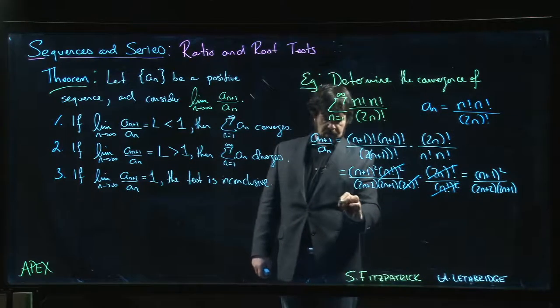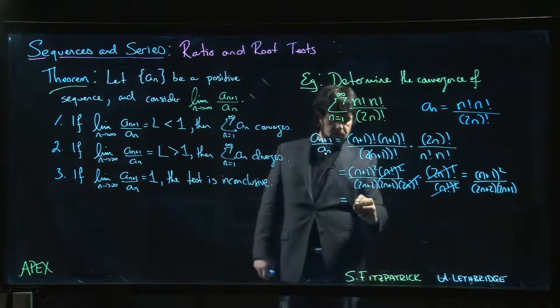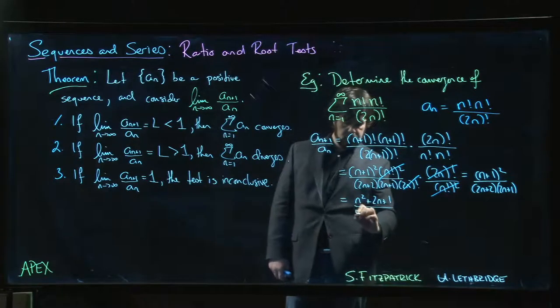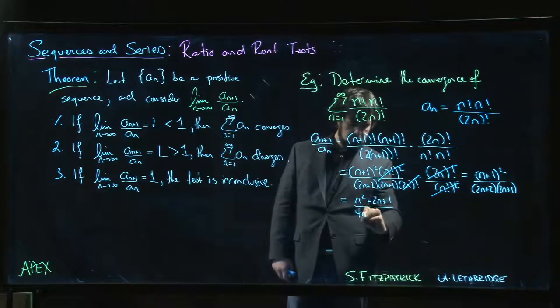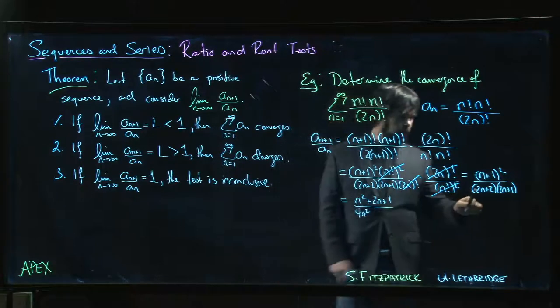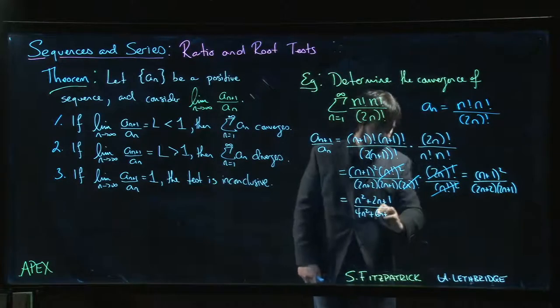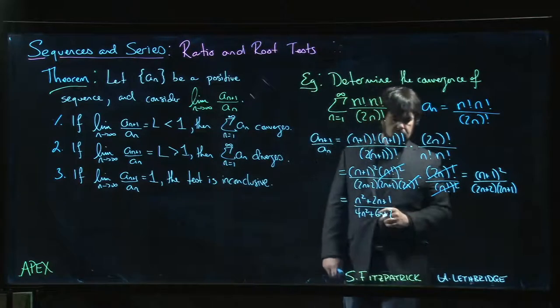You can probably see how that's going to go, but maybe just to make things crystal clear, let's multiply these things out. Okay. 4n squared plus 2n plus 4n... 6n plus 2.